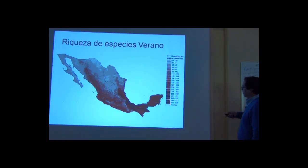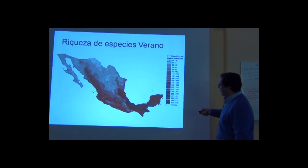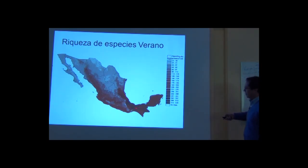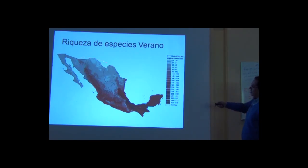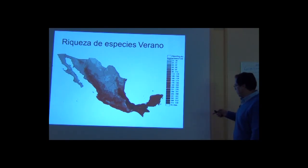The legend here depicts the number of species represented by each color. What you see is exactly the pattern we were discussing: a very rich area in terms of number of species on the coast of the Gulf of Mexico, which is a more humid region. We have low diversity in the arid lands, high species richness along the mountains and the coast, and low species richness in the hot and dry areas of the Balsas Basin and the Cuicatlán Valley.